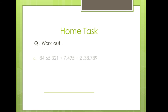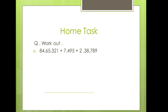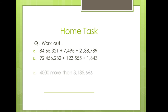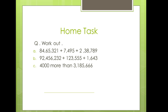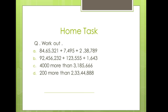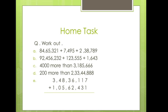Now there is a home task. In part A, three numbers are given. In part B, again three numbers are given but with different digits. Part C says four thousand more than this number — it means you have to add four thousand to the given number. Part D says two hundred more than this number — it means you have to add two hundred to the given number. Part E you simply have to work out. Boys, I think you can do them easily. If there is any problem we will discuss it. Thank you so much, have a nice time, and Allah Hafiz.